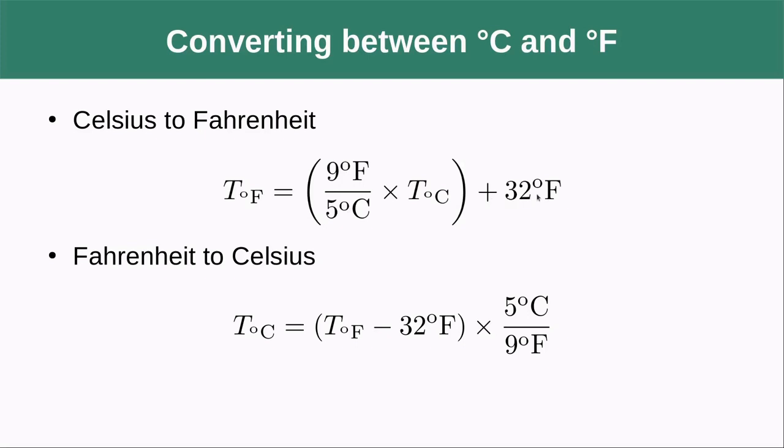And then we're going to have to add 32 degrees Fahrenheit, and so this is the difference between the zero of Celsius. Zero degrees Celsius is 32 degrees Fahrenheit, so we have to add that in when we're converting between them.